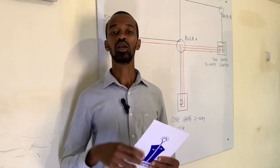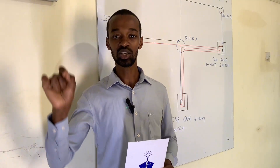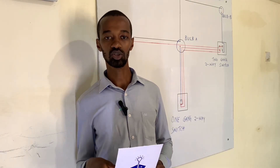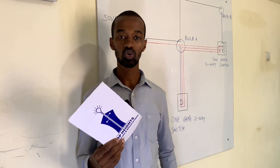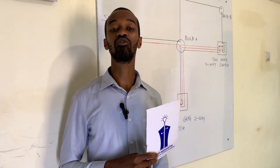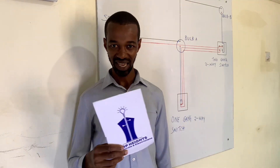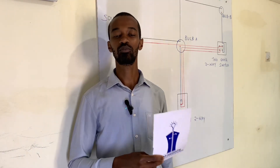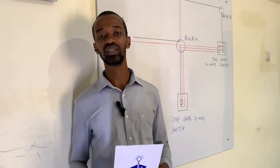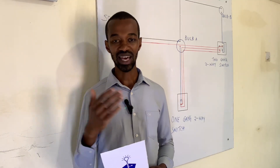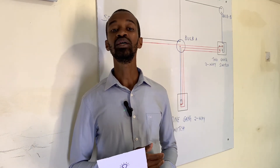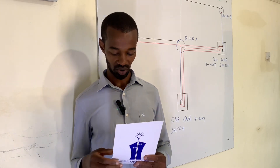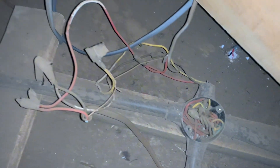Electricity flows from the source to the appliance and back through the neutral path, forming a complete circuit or loop. If there is a loose connection in that loop, it will lead to arcing, sometimes under-voltage or higher voltage, as the appliance tries to get sufficient power from the source. This can definitely lead to fires.